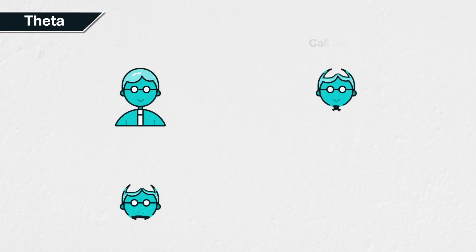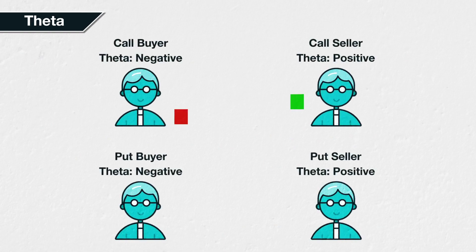For option sellers, their theta is positive, meaning option sellers gain as time passes. This is because when the option they have sold loses value, this results in a profit for them. This is true for both puts and calls. So, the buyer of a call option has negative theta; the buyer of a put option also has negative theta; the seller of a call option has positive theta; and the seller of a put option also has positive theta. Any gain for the option seller is a loss for the option buyer, and vice versa.